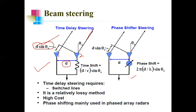Since the signal reaches element two earlier than element one, there is a delay at element one. The time shift is Δt = (d/c) sin θ. If we deliberately delay the signal at element two by Δt = (d/c) sin θ, then both elements will be in time coincidence. When they are added together, the main beam will be in the direction θ₀.